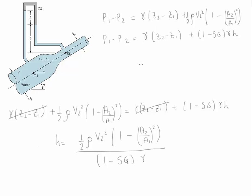Please make sure that you are able to obtain both relationships for the difference of pressure — by hydrostatic distribution and also by Bernoulli's equation. Also make sure that you know how to apply the continuity equation to get the relationship between the velocity at point 1 and the velocity at point 2 in order to arrive at the final equation for H.